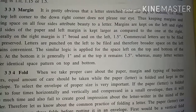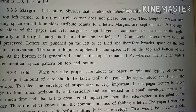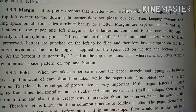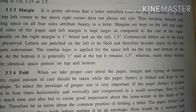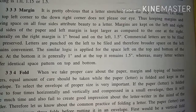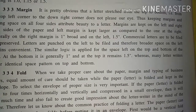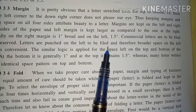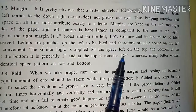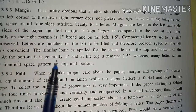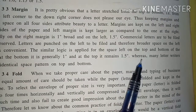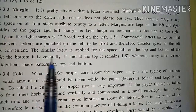The third point is margin. Keeping margins and leaving space on all four sides adds beauty to a letter. Margins are kept on the left and right sides of the paper, and the left margin is kept larger than the right. The right margin is 1 inch broad and the left is 1.5 inches. Commercial letters need to be punched on the left to be filed, so we keep more space on the left side. Similarly, at the bottom it is generally 1 inch and at the top we keep 1.5 inches, though some writers prefer identical spacing on top and bottom.